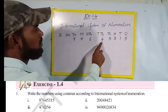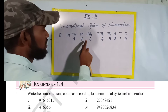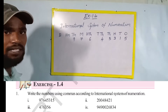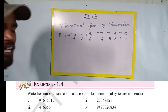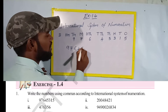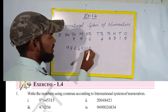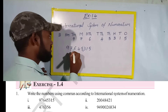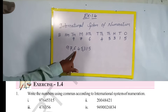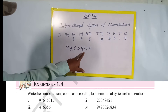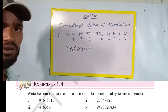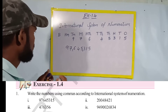Ninety-seven million, six hundred and forty-five thousand, three hundred and fifteen is your answer. Now how do we place the commas? See here: 9, 7, 6, 4, 5, 3, 1, 5 — first three, next three, next three. So read as: 97,645,315 — ninety-seven million, six hundred and forty-five thousand, three hundred and fifteen.